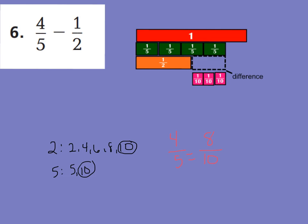Now, 1 half, we discovered, equals 5 tenths. So, this has the same value as 5 tenths. So, we have 8 tenths minus 5 tenths gives you this little leftover portion right here that is 3 tenths. So, we can say that 4 fifths minus 1 half is equal to 3 tenths. It's already in simplest form.